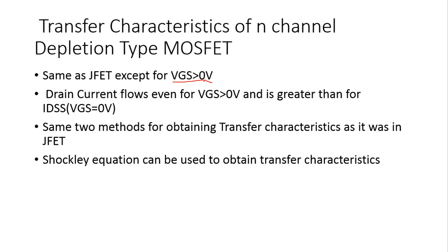We know that the junction field effect transistor does not operate for positive gate-to-source voltage, so that is why there is a bit of difference between the transfer characteristics of the depletion type MOSFET and the JFET — specifically, drain current flows even when VGS is greater than 0 volt.